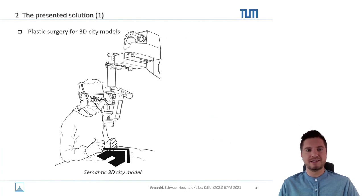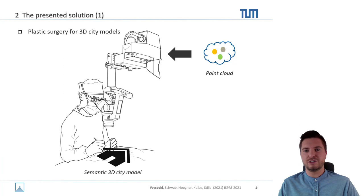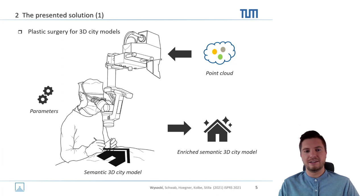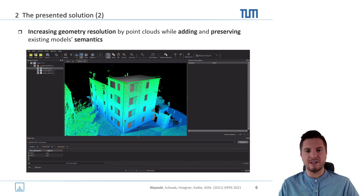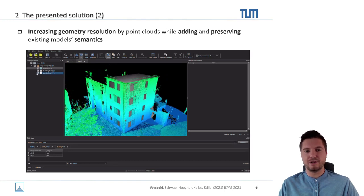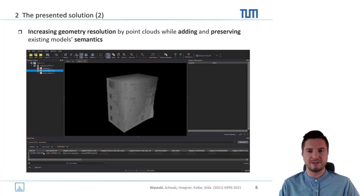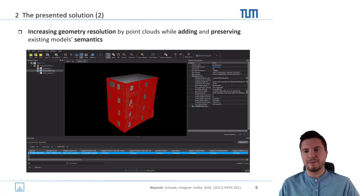Therefore, we present a solution: Plastic Surgery for 3D City Models. We take the semantic 3D city model as the existing structured information, add unstructured information such as point clouds, and process them within a parameter-controlled pipeline depending on the application at hand. The result is an enriched semantic 3D city model with increased geometry resolution, added semantics, and preserved existing semantics.